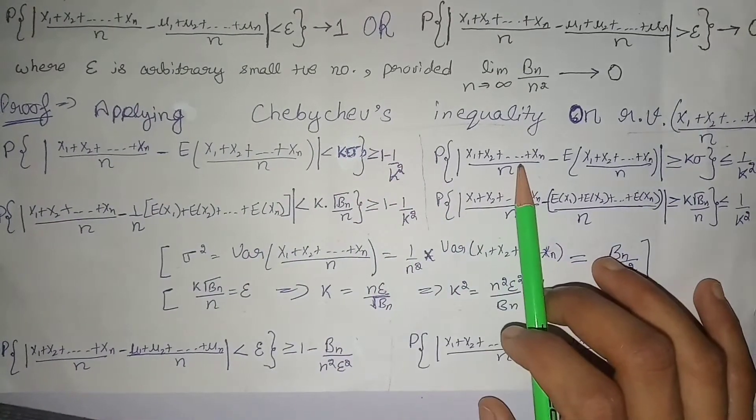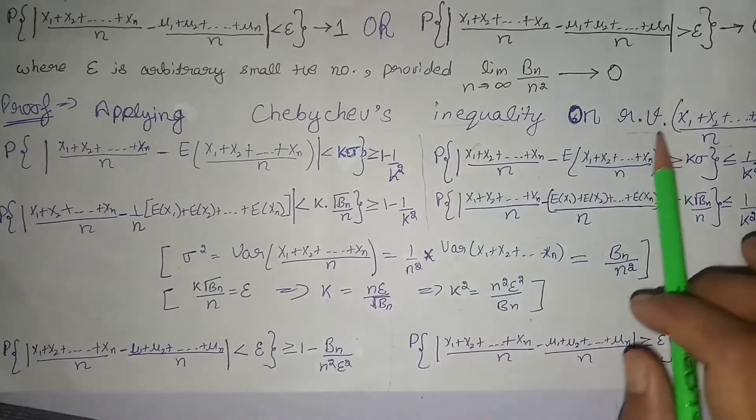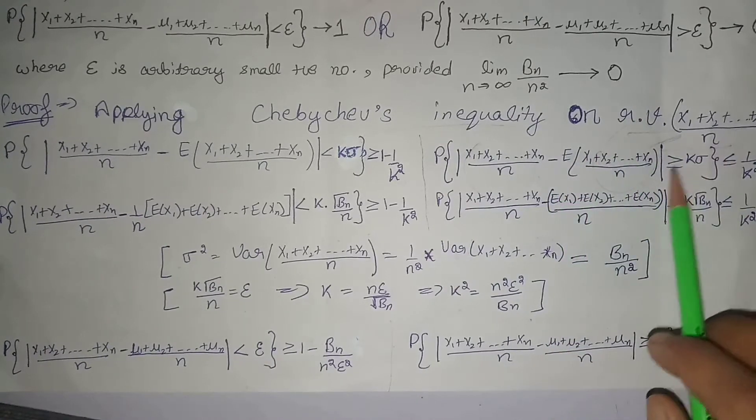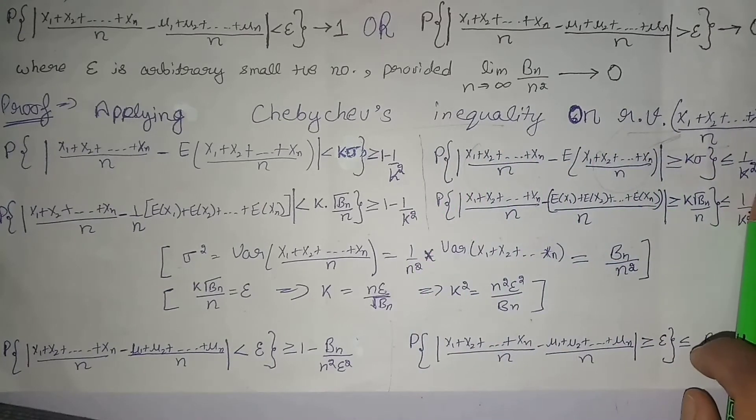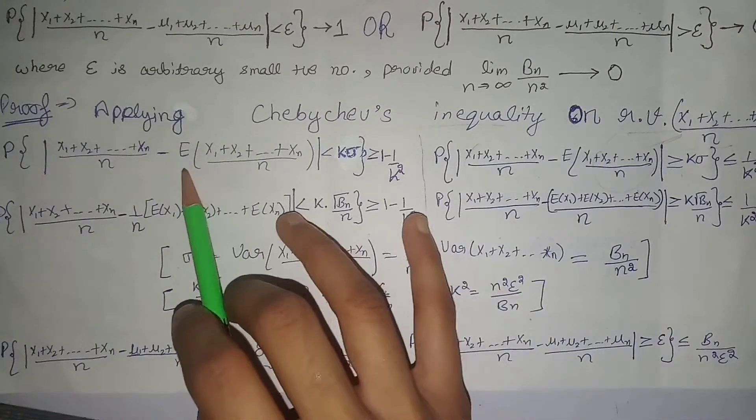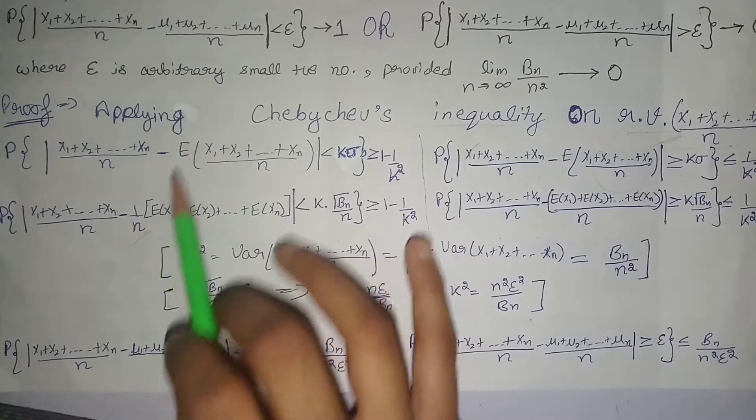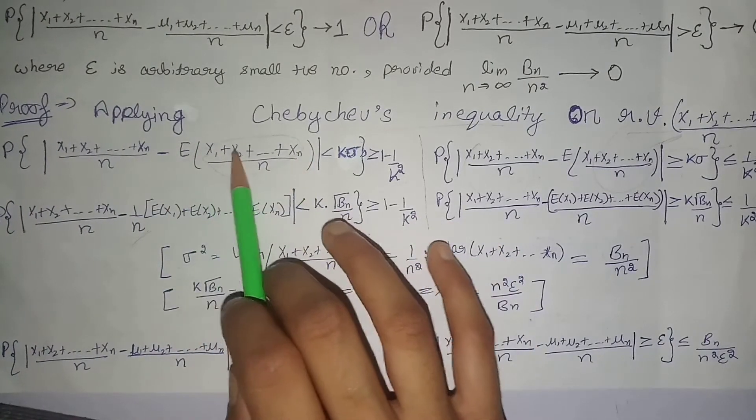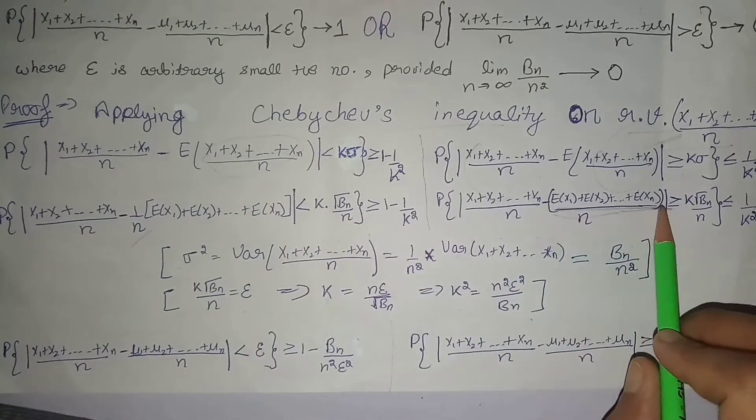Next, our second form is Chebyshev's inequality: probability of modulus of that variable minus expectation of that variable, greater than or equal to k sigma, and this whole probability is less than or equal to 1 divided by k square. Now let's start. When we put expectation here, first of all 1 by n, then we put our expectation inside. We have expectation of x1 plus expectation of x2 up to plus expectation of xn.